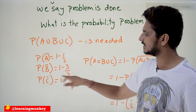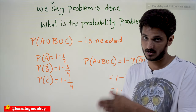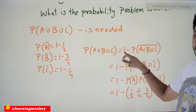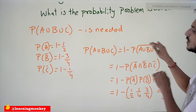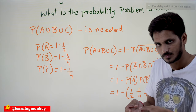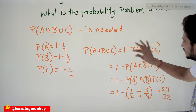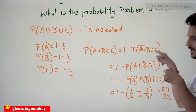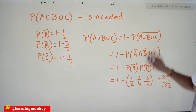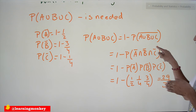From the complement law, probability of A complement is 1 minus 1/2, probability of B complement is 1 minus 3/4, and probability of C complement is 1 minus 1/4. Probability of A union B union C can be written as 1 minus probability of the complement of A union B union C. The complement means no one is going to solve the problem. The probability that no one solves it equals probability of A complement and B complement and C complement.